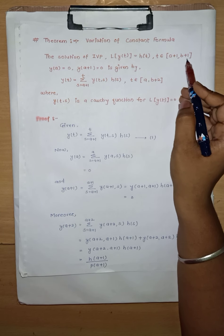We know that y(s+1, s) = 1/p(s). So here we have y(a+2, a+1), which gives us 1/p(a+1), since s = a+1 here. Therefore we get h(a+1) / p(a+1).